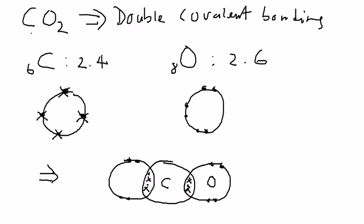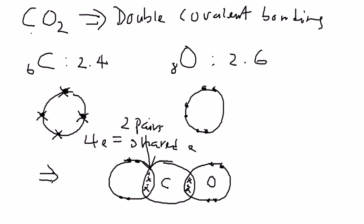As you can see very clearly, there are two pairs of shared electrons — two pairs meaning there are four electrons for each bonding. That's why we call it a double covalent bonding, or double bonding for short.